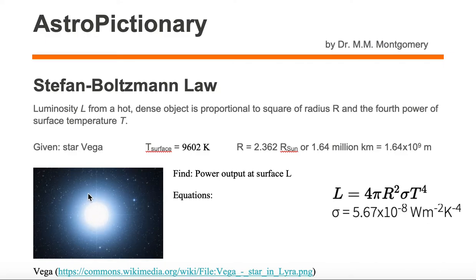We need the Stefan-Boltzmann law equation, which relates luminosity L to radius and temperature. Luminosity equals 4π times R squared times sigma times T to the fourth. Sigma is the Stefan-Boltzmann constant, equal to 5.67 times 10 to the minus 8 watts per meter squared per Kelvin to the fourth.